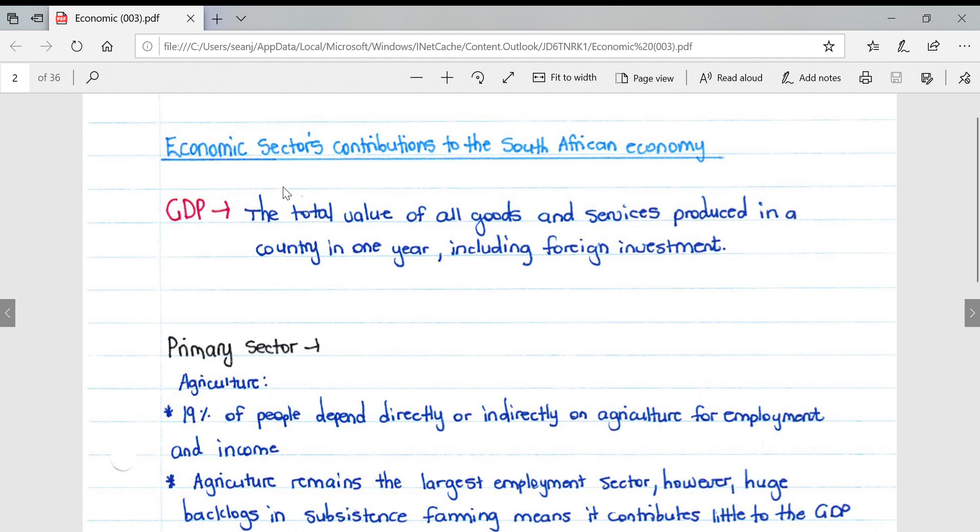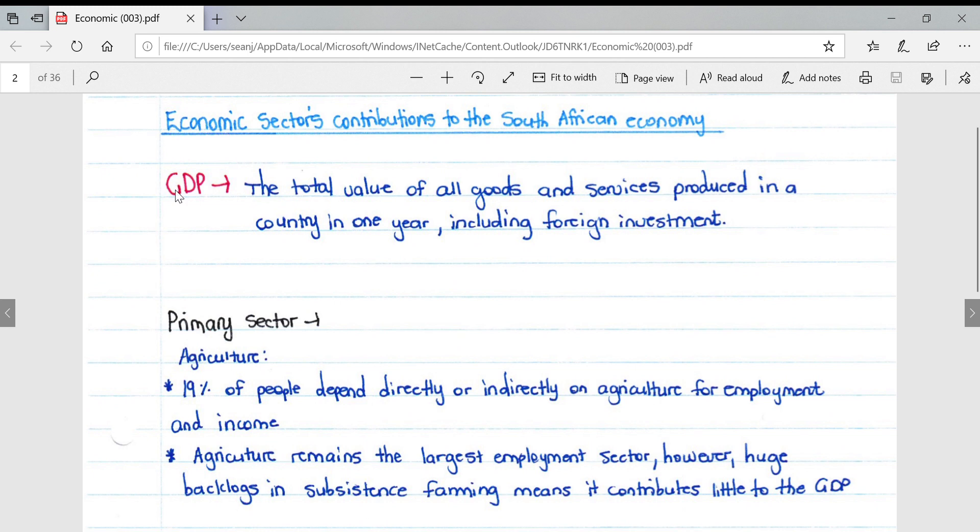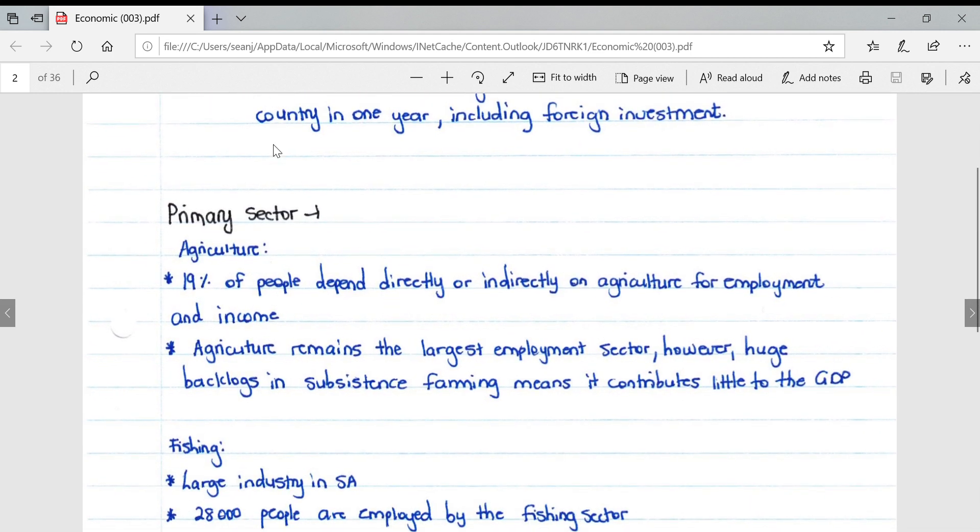Looking at the contributions of different economic sectors to the South African economy, we'll first look at GDP, which is gross domestic product - the total value of all goods and services produced in a country within one year, including foreign investment. That is contrasted slightly by GNP, which is gross national product, and the only difference is that it does not include foreign investment.